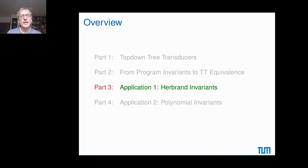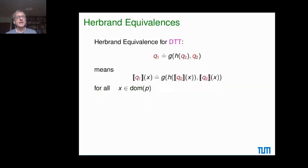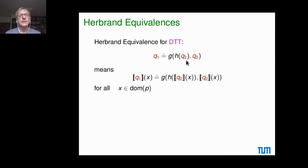Now we want to check certain invariants. Let's consider two kinds: Herbrand equalities and polynomial equalities. For Herbrand equivalence in the transducer setting, you have transducer states Q1 and Q2 and you may ask whether for all inputs, the output produced by Q1 for that input is the same as the output produced by Q2. You ask whether this holds whenever for every input tree accepted by the domain automaton in state P.